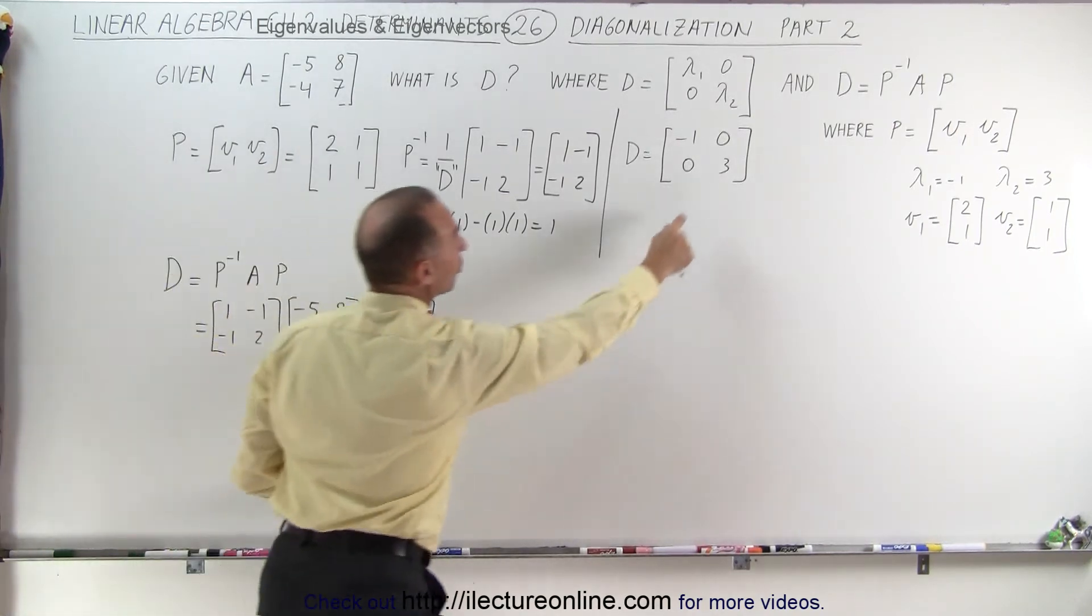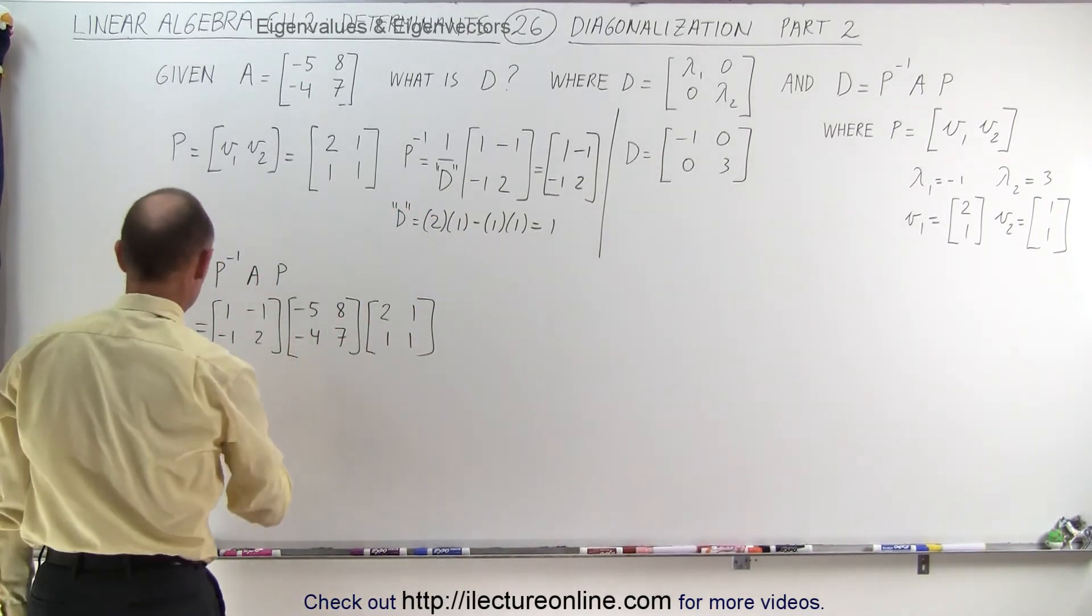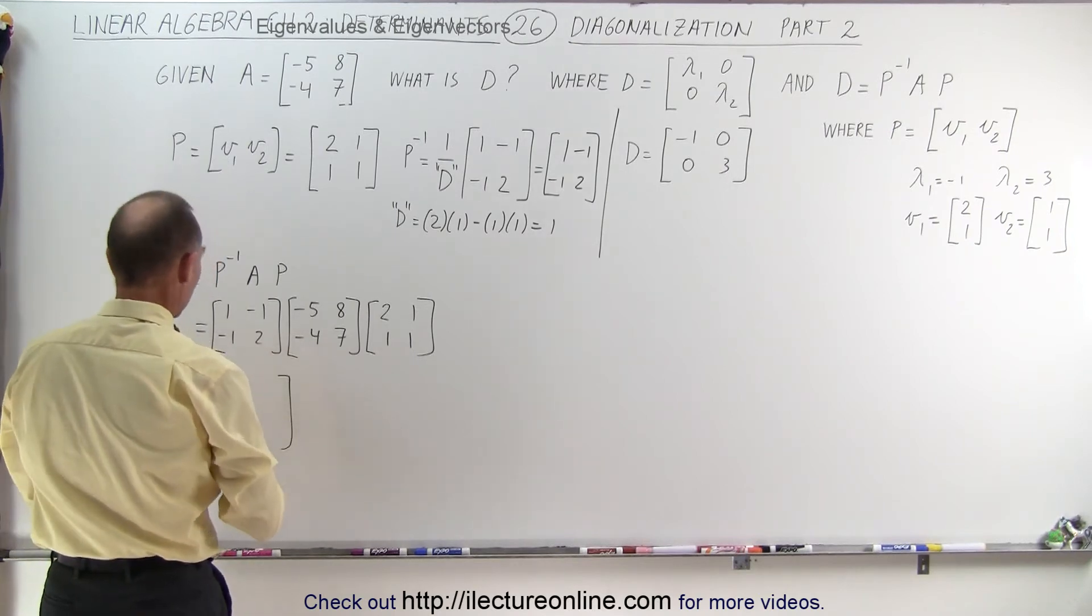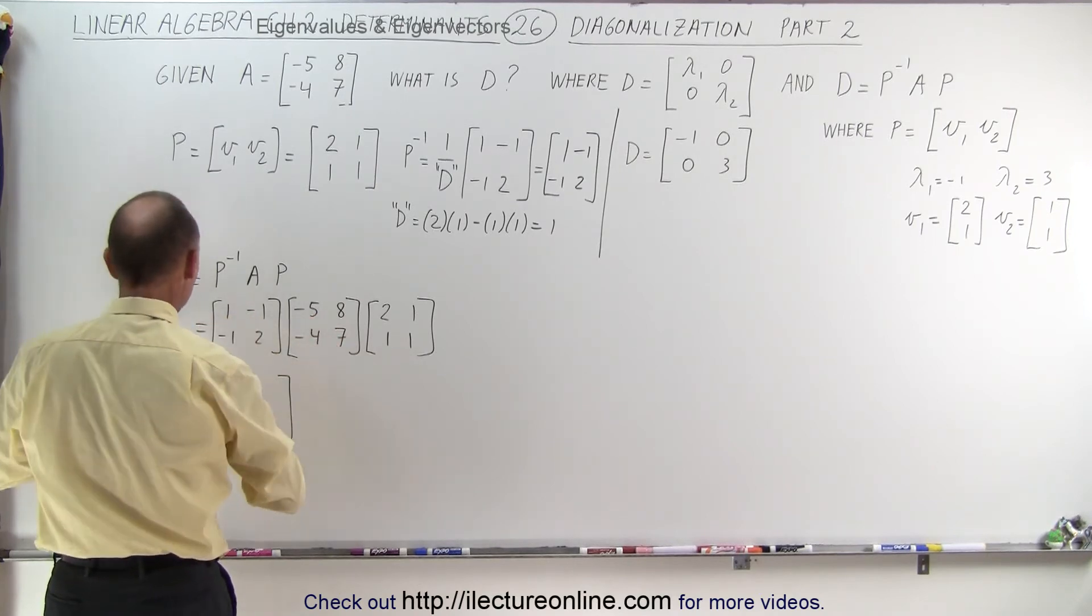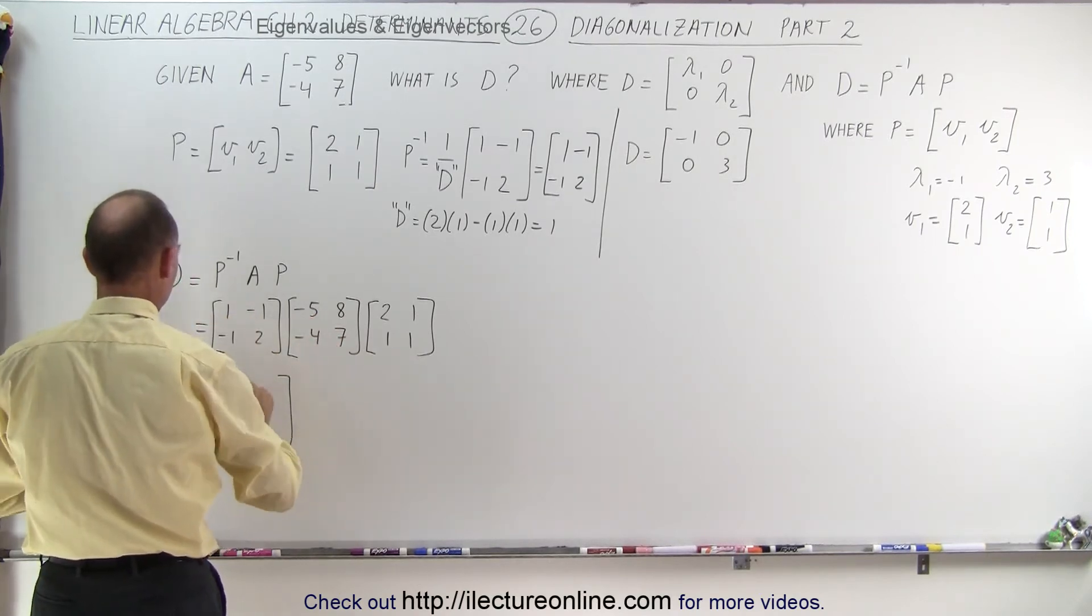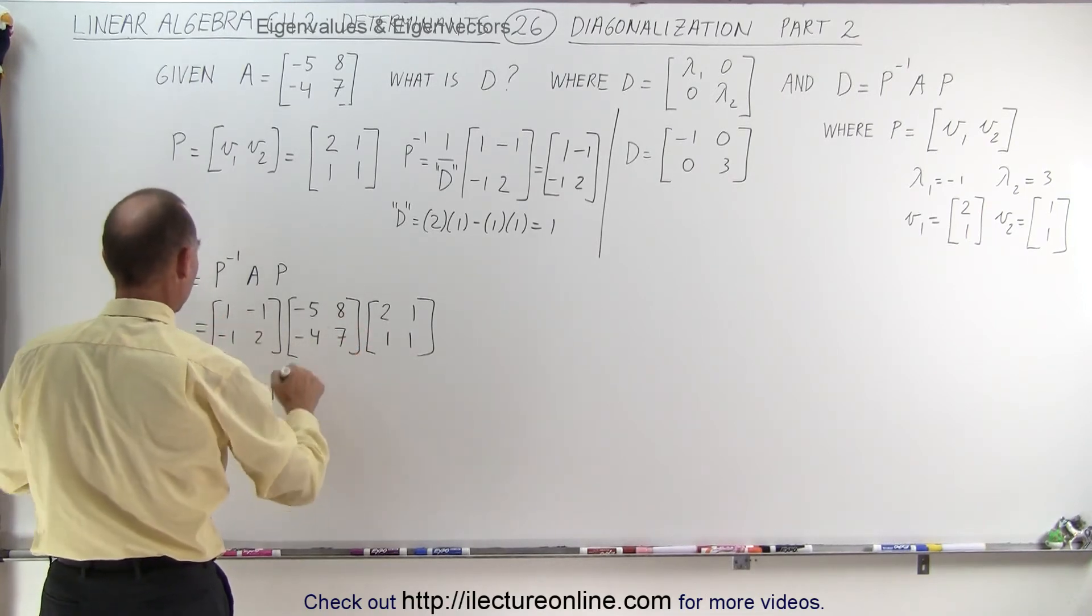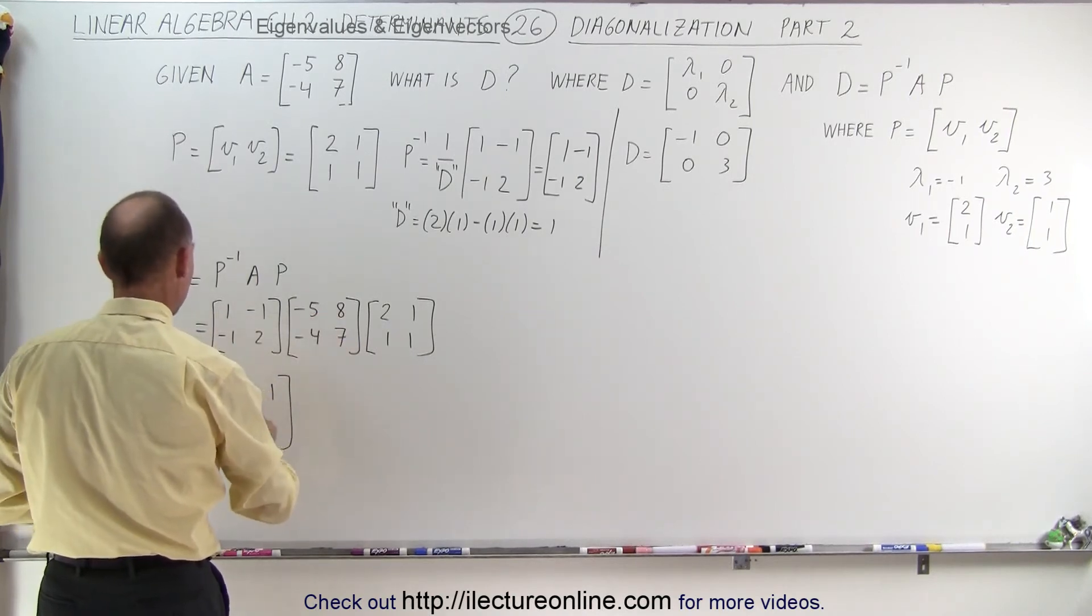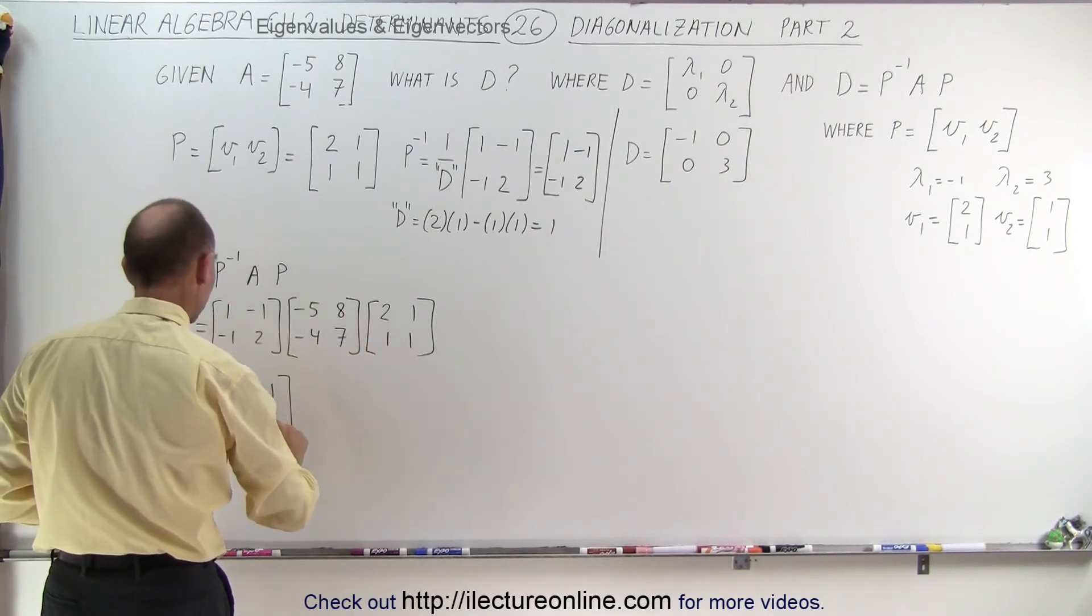When we multiply these together we should get this matrix right here. Let's find out if that's true. First we'll multiply these two together which will give us the following. We get 1 times -5 minus 1 times -4, so -5 plus 4 is -1. Next we get 8 minus 7 which is 1. 5 minus 8 is -3 and -8 plus 14 would be positive 6.